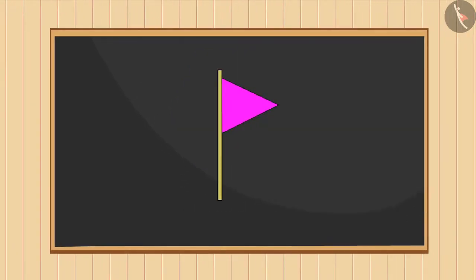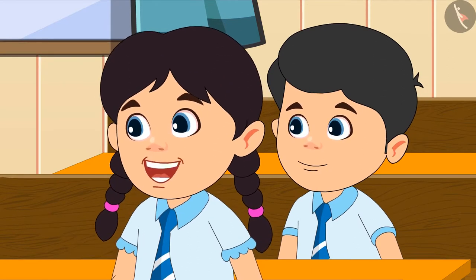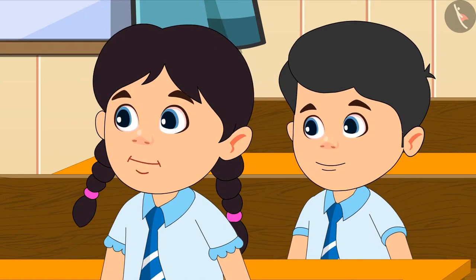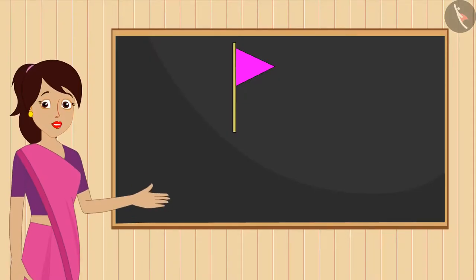Students, all of you must have seen such a flag. Yes teacher, I have seen such a flag in a fair. The shape of the cloth of this flag is like a triangle. You identified it right, Priya. A triangle is a shape that has three sides that are joined like this.